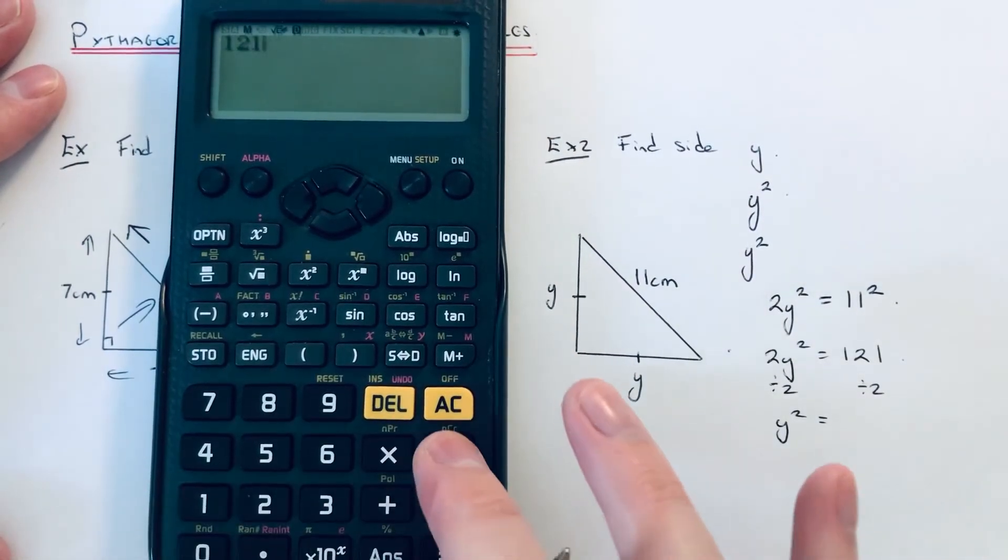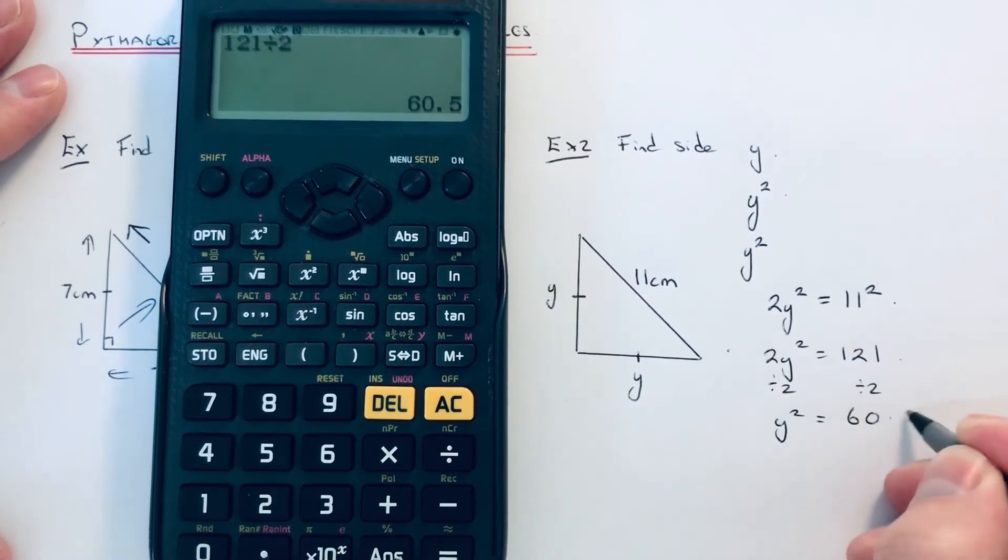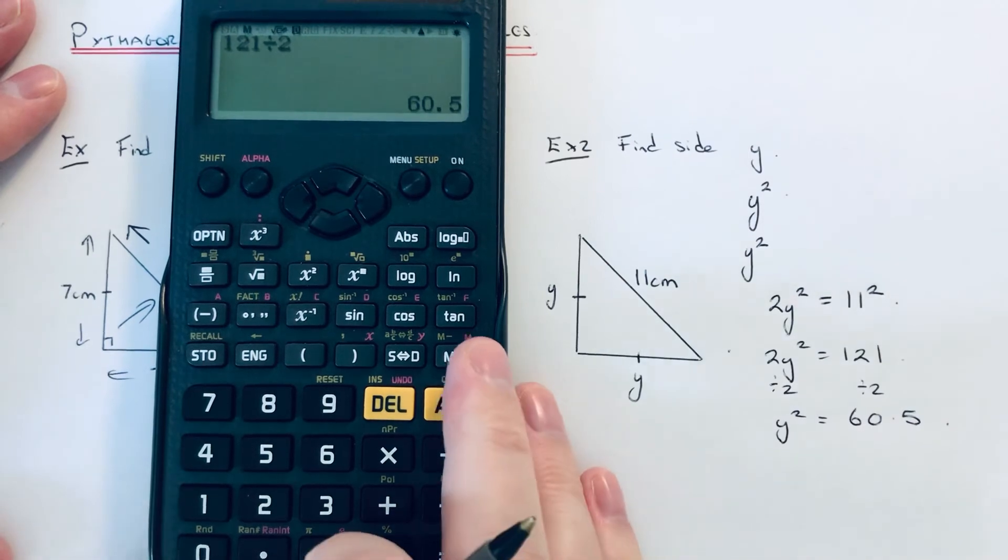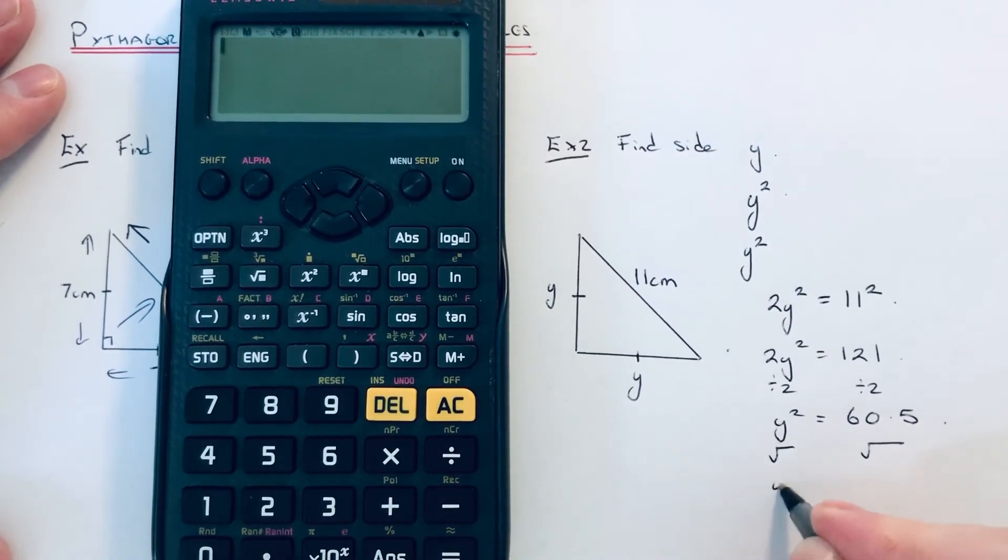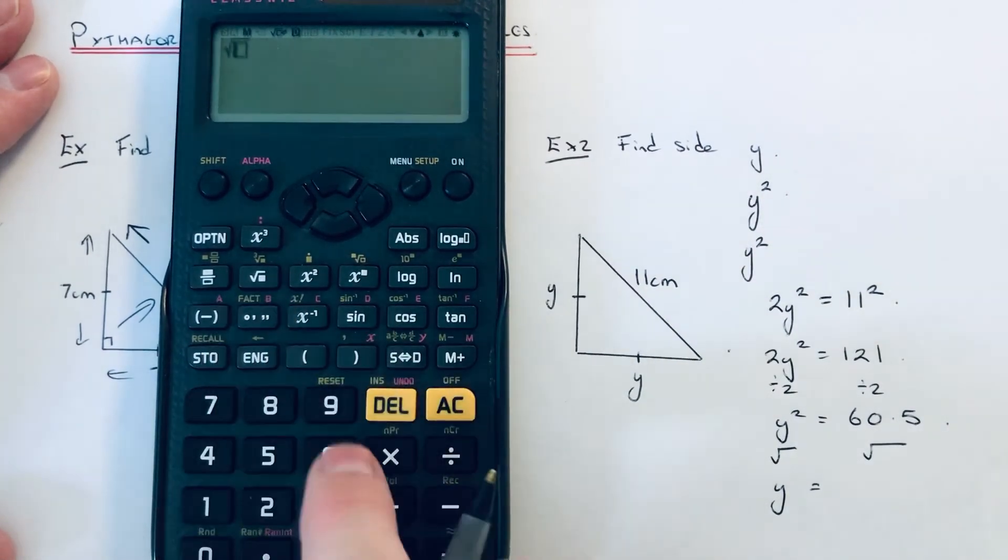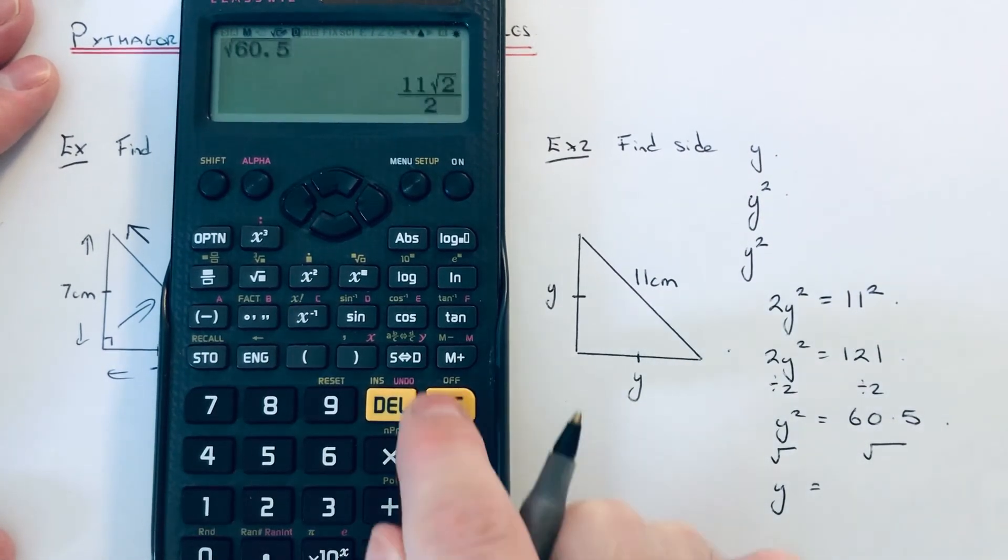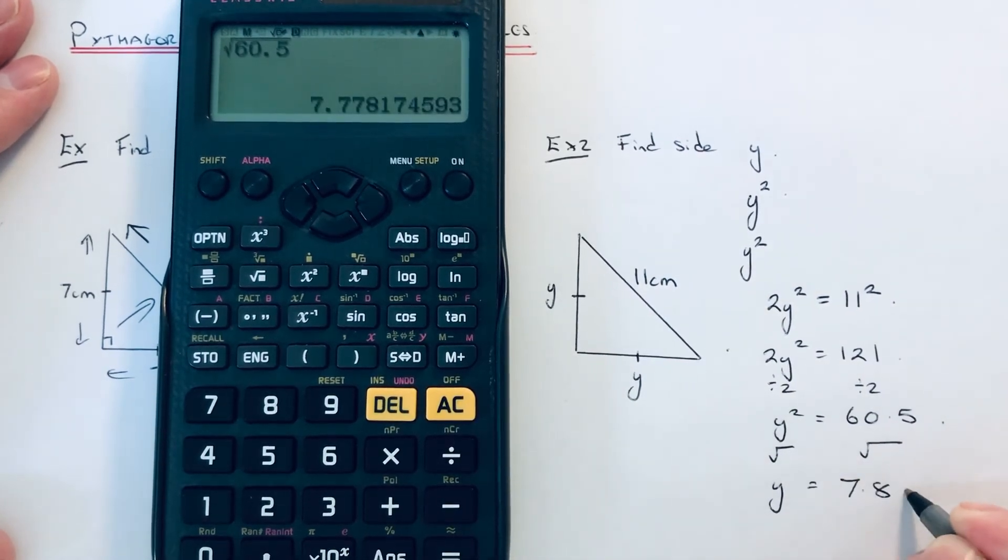121 divided by two is 60.5, and then we just need to square root that 60.5. The square root of 60.5 is 7.8 centimeters to one decimal place.